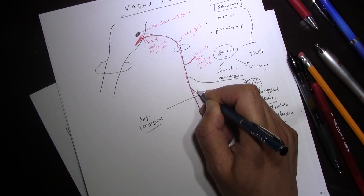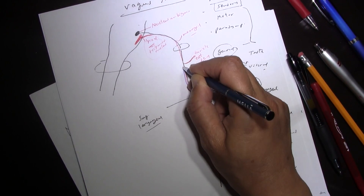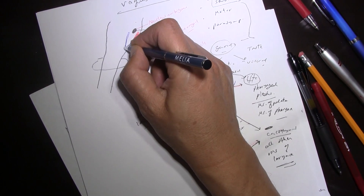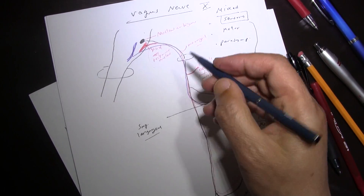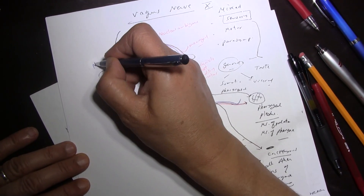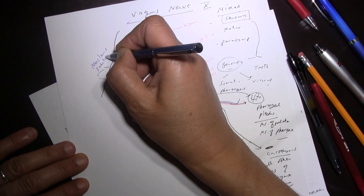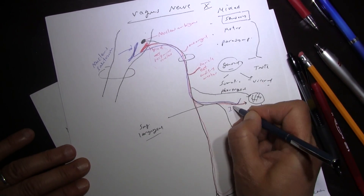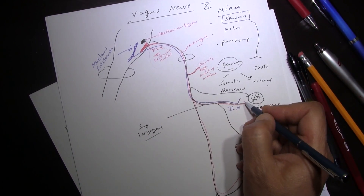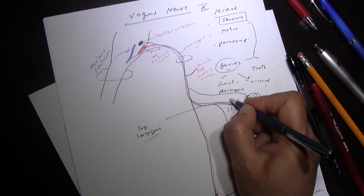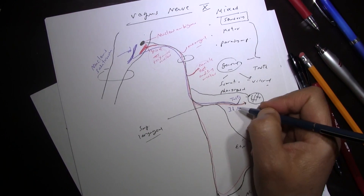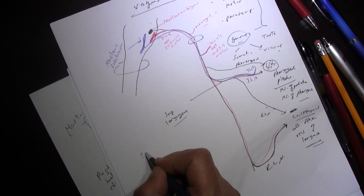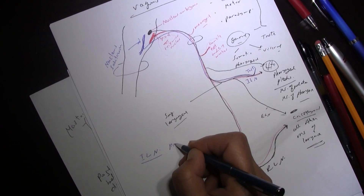The internal laryngeal nerve also carries taste sensation from the posterior part of the tongue — shown in blue — taking it to another nucleus called the nucleus solitarius. So the internal laryngeal nerve carries taste sensation from the epiglottic region and the posterior part of the tongue. Therefore, the internal laryngeal nerve is purely sensory.